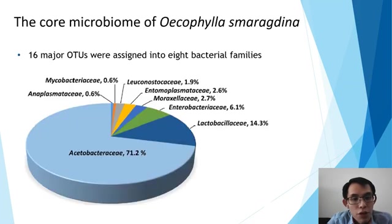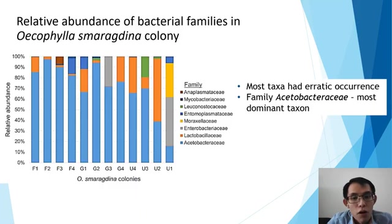These 16 major OTUs were assigned into 8 bacterial families that formed the core microbiome of the weaver ant. As you can see from the pie chart, Acetobacteraceae is the most abundant bacterial family in the core microbiome. While most of the taxa had erratic occurrence, the family Acetobacteraceae is the most abundant taxon across all the samples.